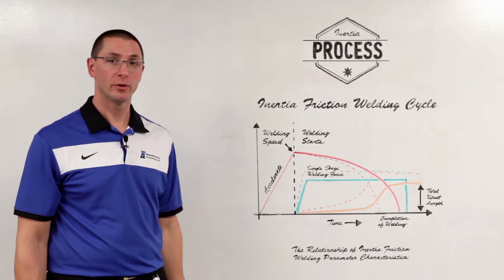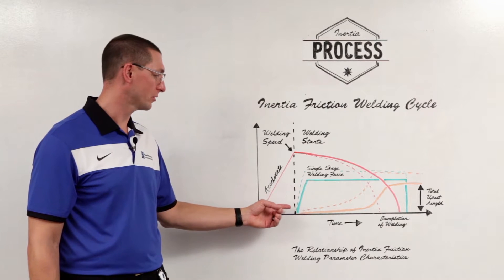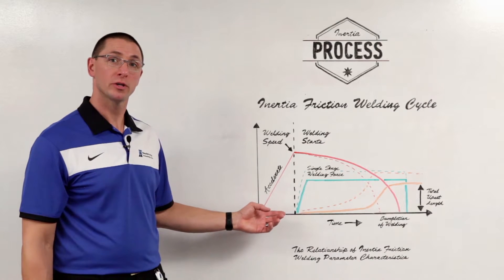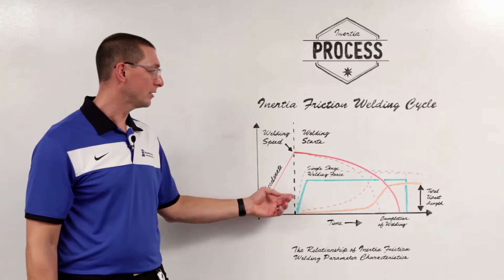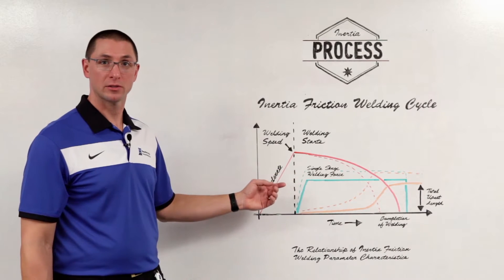As I mentioned, the power input of the inertia weld is controlled by the forge force. So if I want to increase the power input, I can increase my forge force, represented by the green dash line.